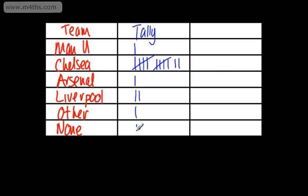Let's put some more in. This would represent six people — we've got five here and one just here. This one would represent three people, this one two people, this one one person, and then one more which is four.